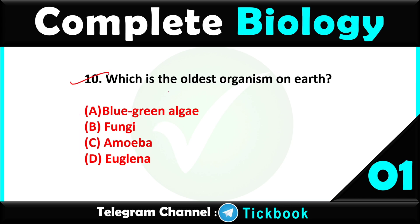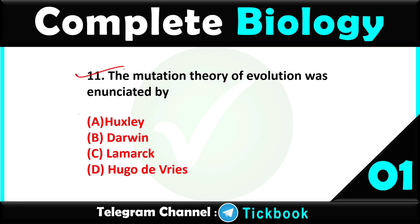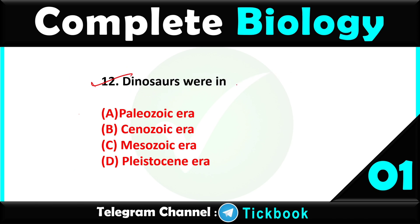Question number ten: which is the oldest organism on earth — option number A, blue-green algae. Question number eleven: the mutation theory of evolution was enunciated by — option number D, Hugo de Vries, is the right answer.